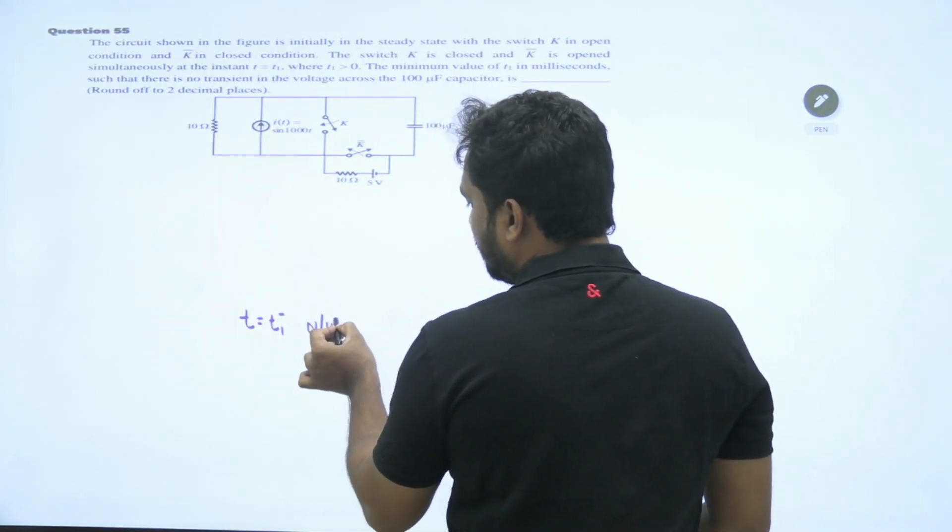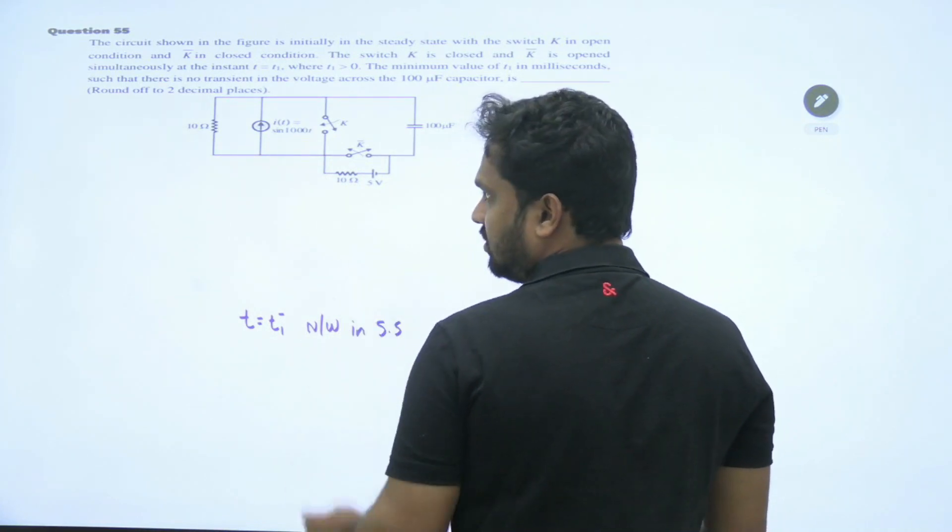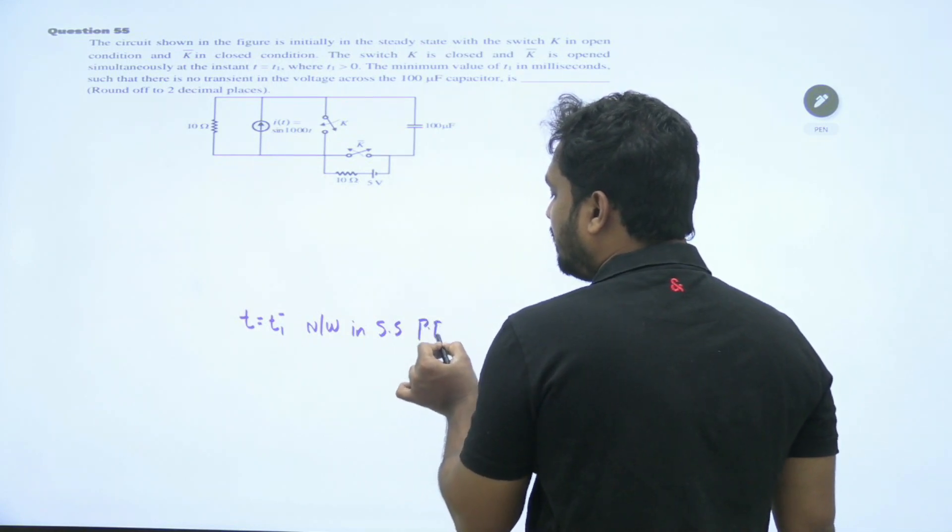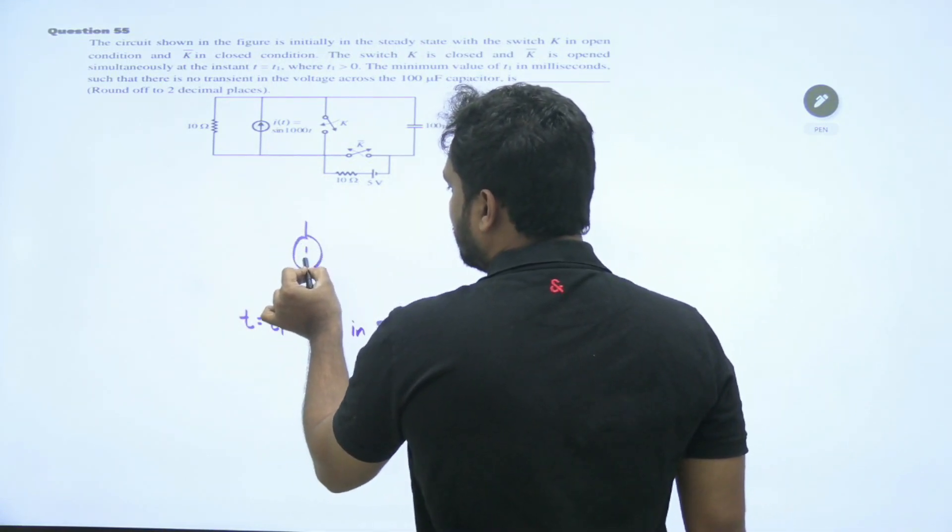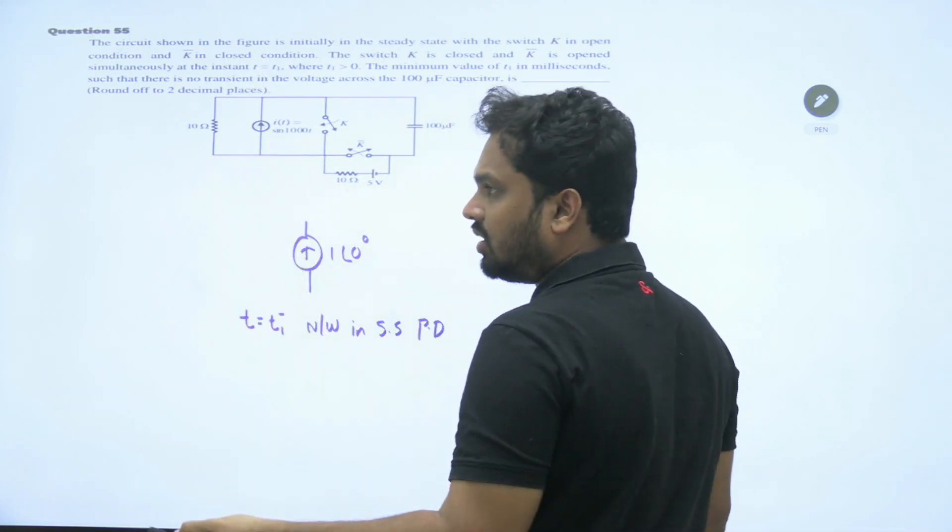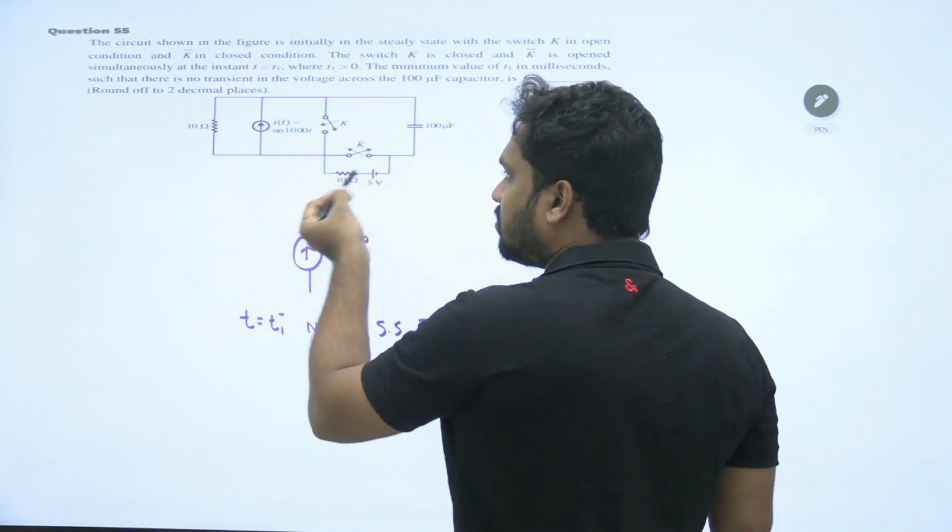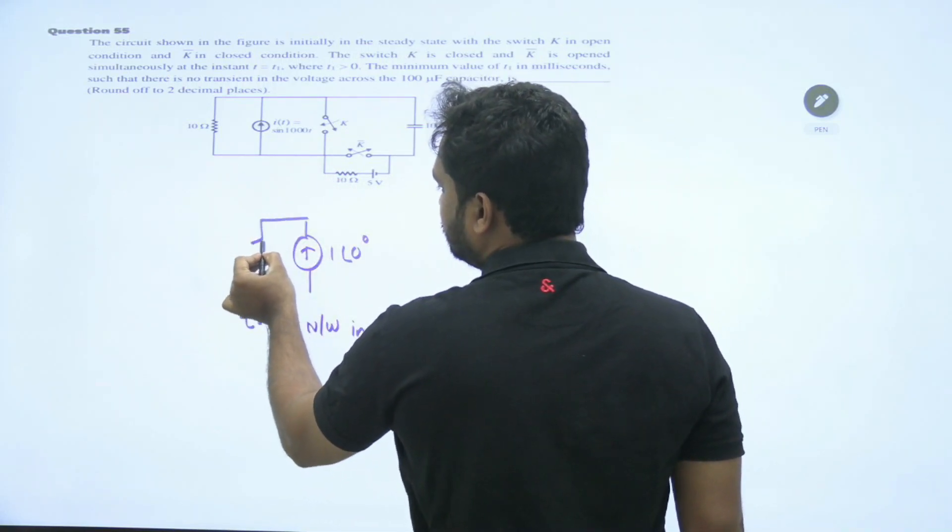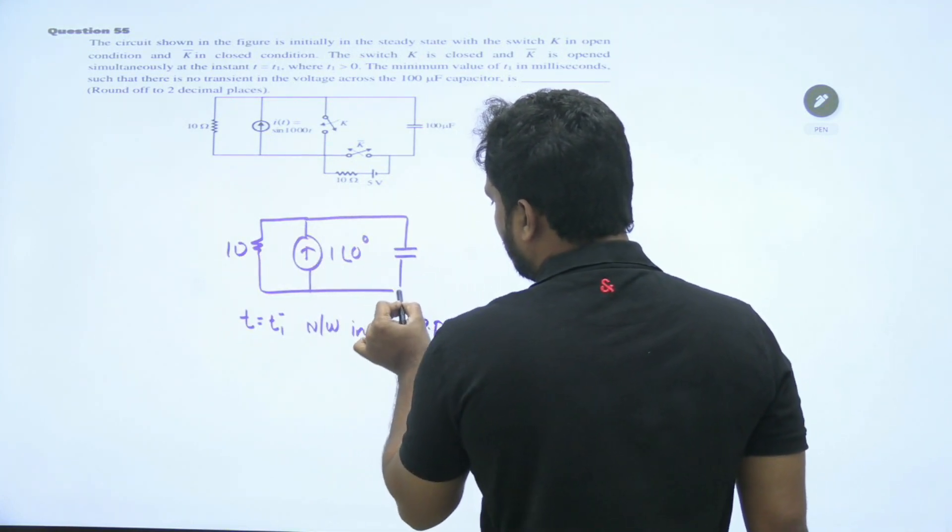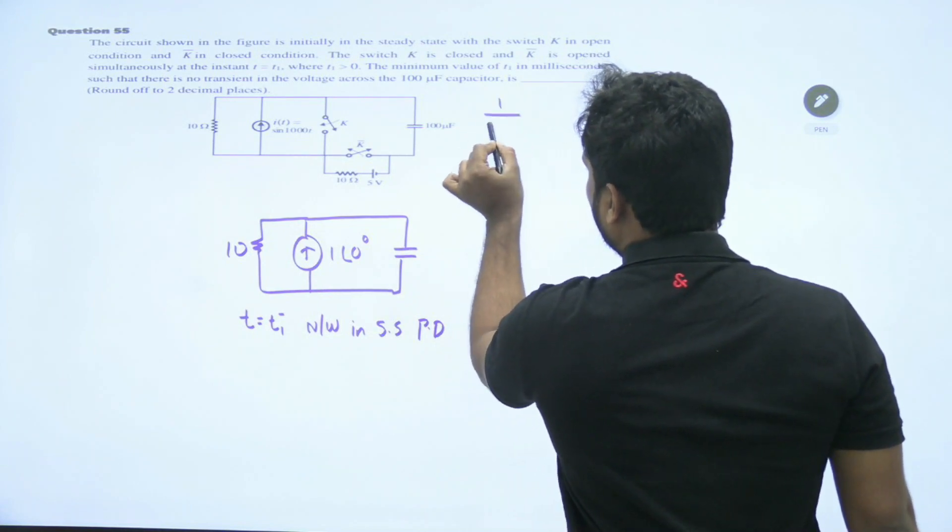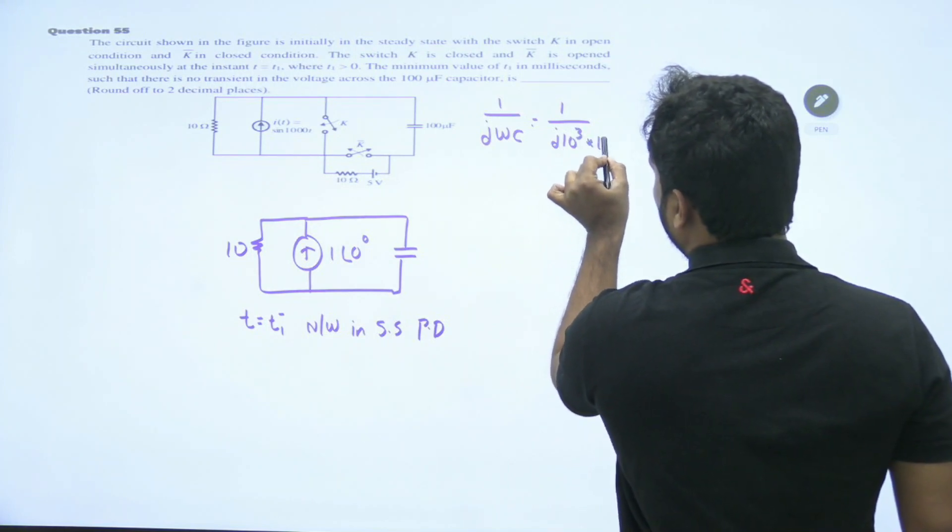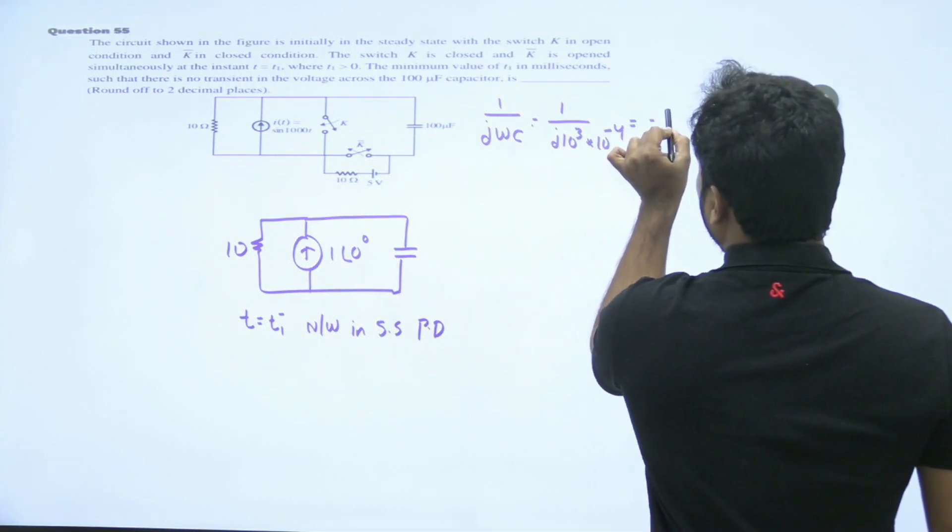Before t1, just before t1, your network is like this. Network is in steady state. Steady state, but here input is AC. Then I can take phasor domain. In phasor domain, this is 1 angle 0 degrees. You can take sine as reference, cos as reference, maximum value or RMS, but you have to convert back to same. 10 and here what is 1 by j omega C, 1 by j 10^3 into 10^-4, minus j 10.